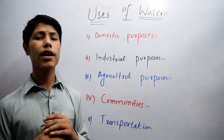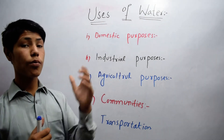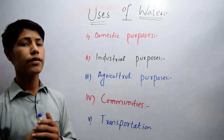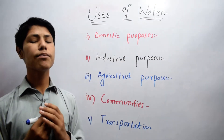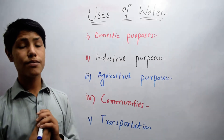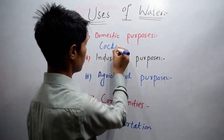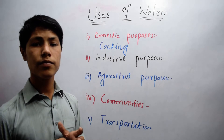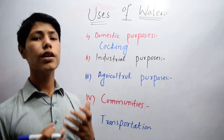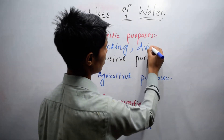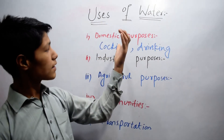In this video I am going to talk about the uses of water — what are the uses of water in our daily life. The first one is domestic purposes. Domestic purposes means that water is used for cooking; in our home when we want to make food we use it for cooking. We use it for drinking when we are thirsty. This is called domestic purposes.